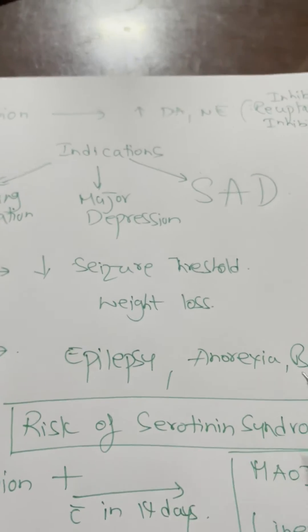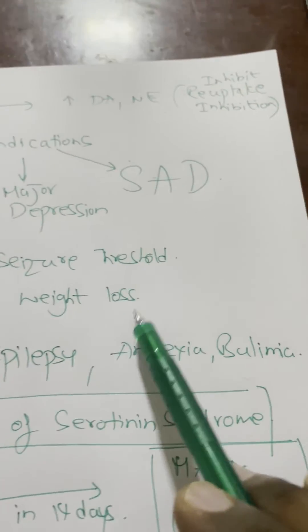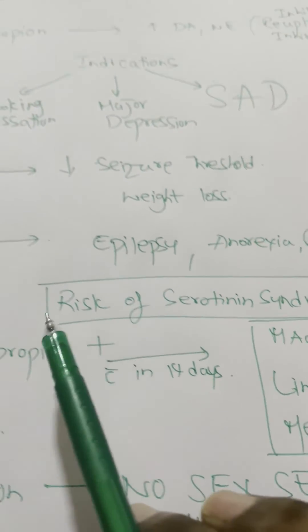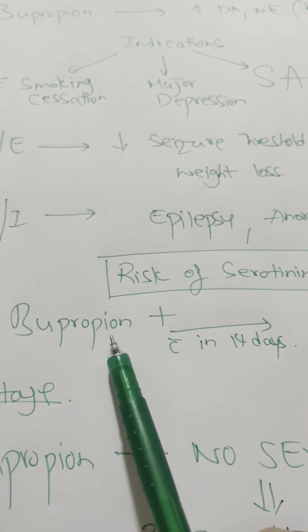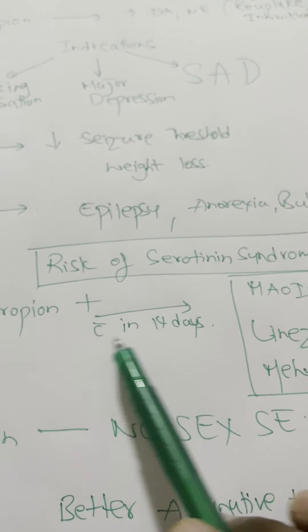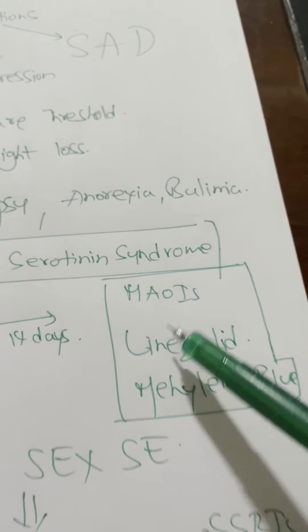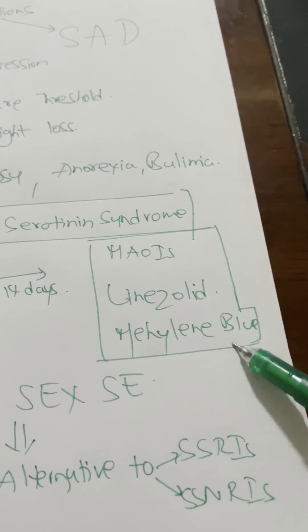Because it decreases the seizure threshold, epilepsy is a contraindication. Weight loss means anorexia and bulimia are also contraindications. Now there is a risk of serotonin syndrome if bupropion and any of these three drugs are given within 14 days: MAO inhibitors, linezolid, and methylene blue.